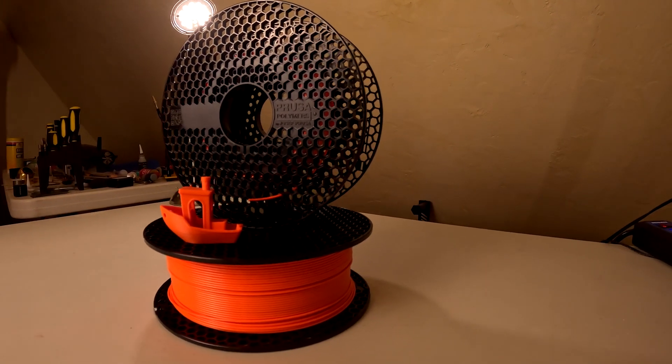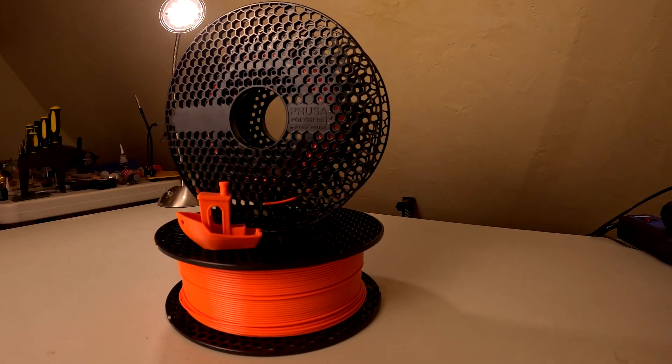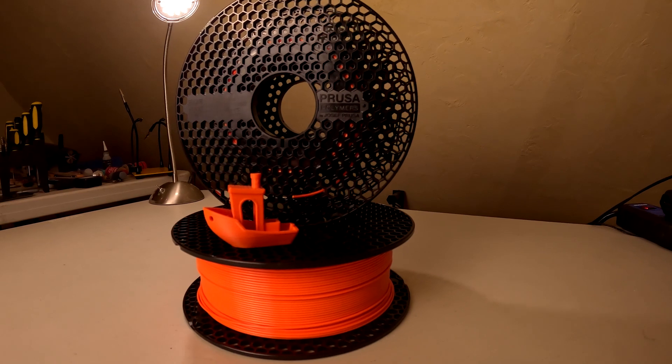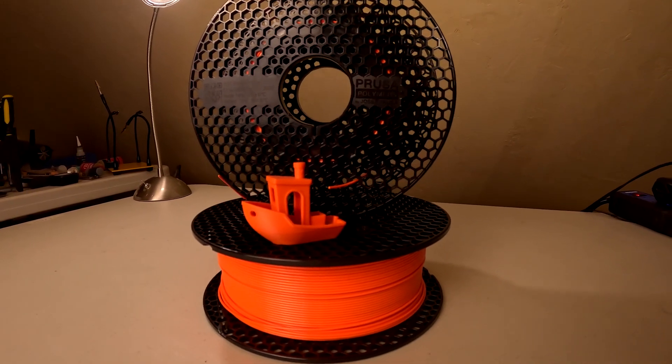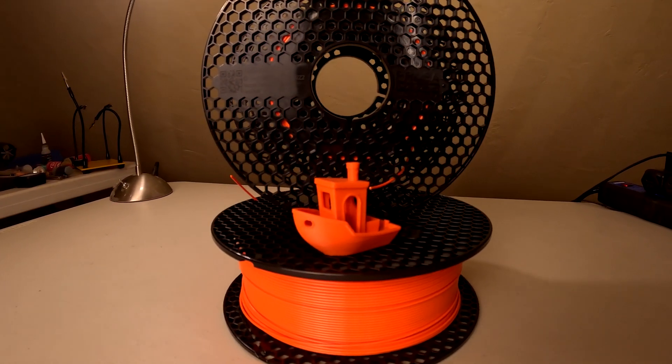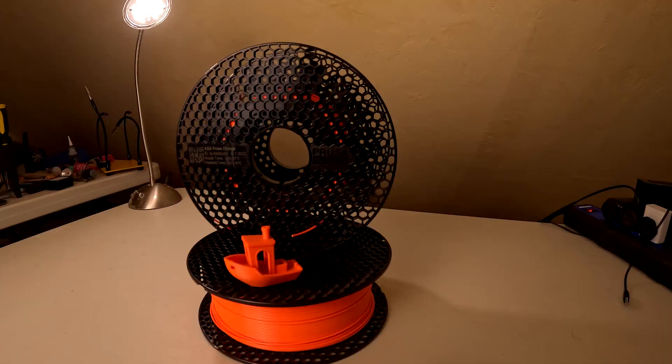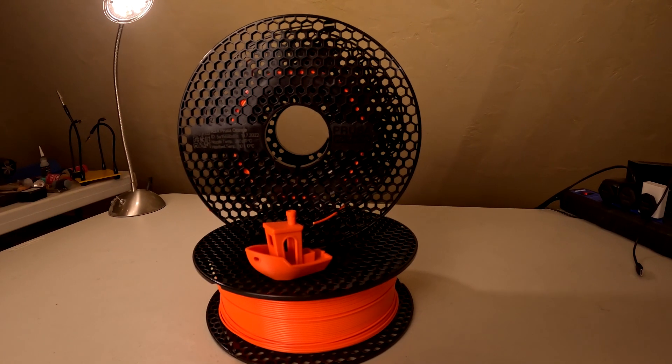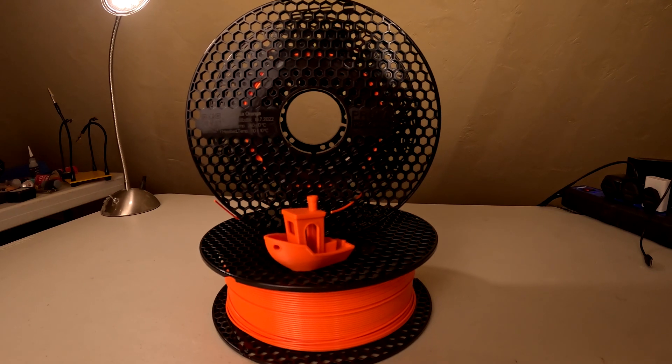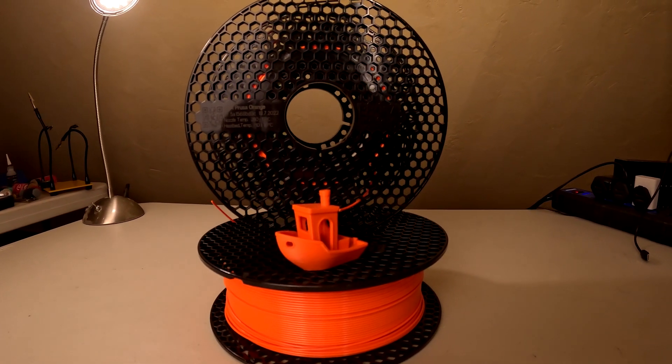Now that we know our fuel mixture, we can move on to the design of the motor casing and nozzle. I chose to print the motor out of Prusament ASA because of its high temperature resistance of around 110 degrees Celsius. Also, ASA is less dense than other materials making the motor a bit lighter.